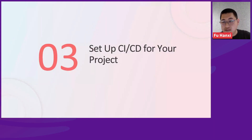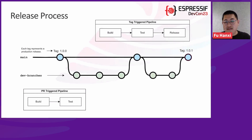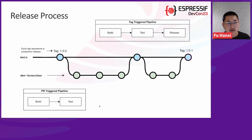This is the third part: how to set up CI/CD for your project. This is the release process — all commits are made in dev branches, dev branches are merged into the main branch, and releases are made by tagging the main branch. Each tag represents a production release. On dev branches, pull requests trigger a pipeline with build stage jobs and test stage jobs. On tag-triggered pipelines — the production release — it includes build stage jobs, test stage jobs, and release stage jobs.